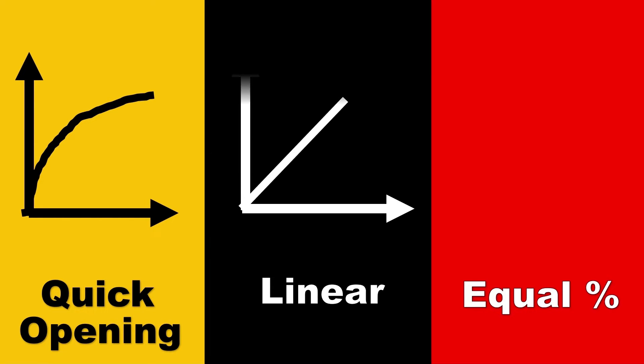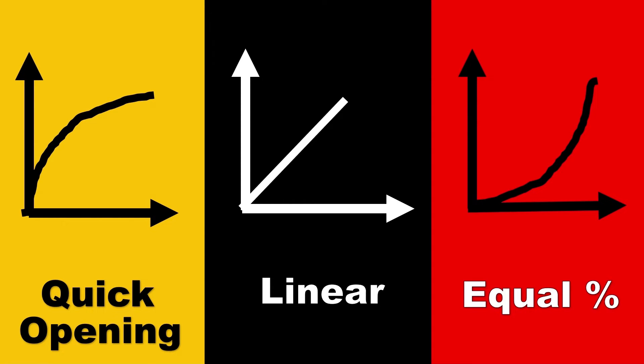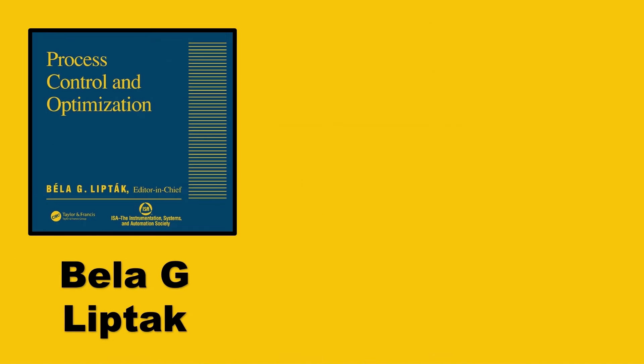Usually we have three characteristics: quick opening, linear, and equal percentage. Now let's see how to select which characteristic.